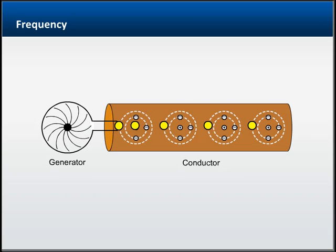At specific points in the revolution of the generator, the voltage changes directions and causes the electrons to move in the opposite direction, and the chain reaction is reversed.